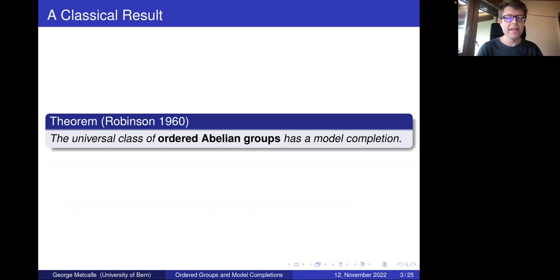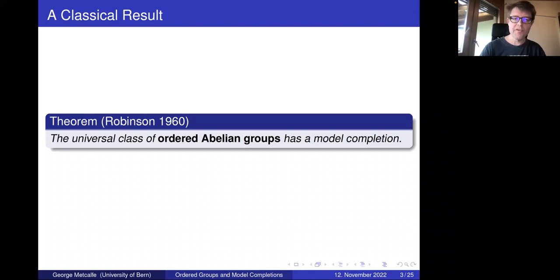A classical result going back to 1960 by Robinson is that the universal class of ordered — and I mean totally ordered — abelian groups has a model completion. In fact, this is the theory of non-trivial, dense, totally ordered abelian groups.